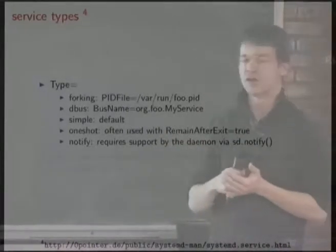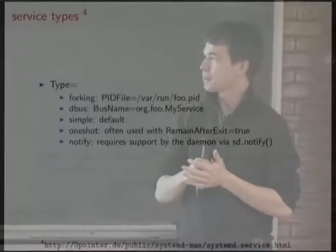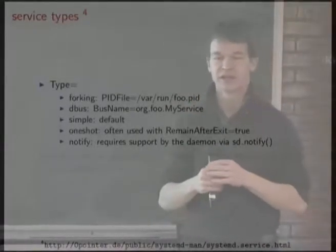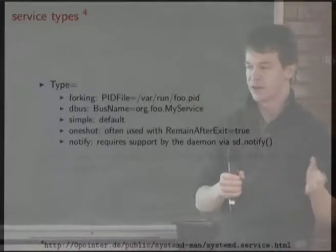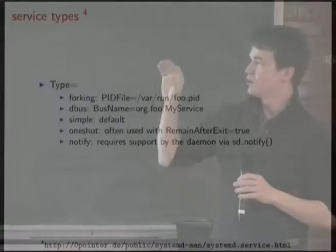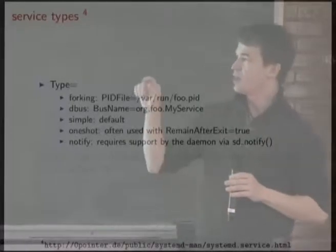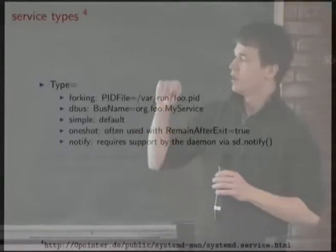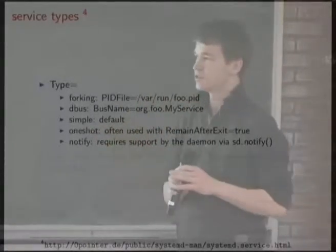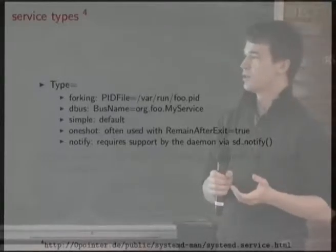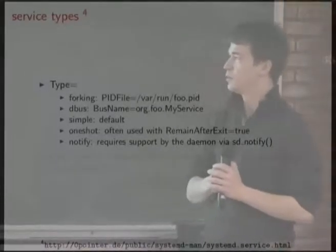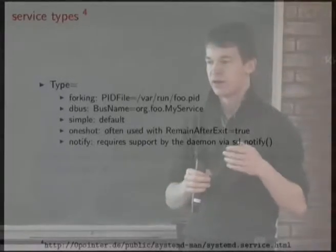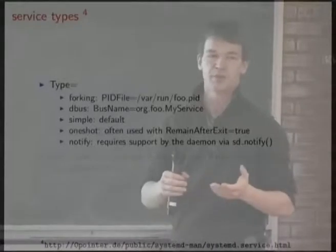Simple is the default type, for non-forking daemons. D-Bus type specifies that the daemon signals systemd when it's ready to accept requests, meaning dependent services are then started. You specify the bus name and when that's taken, the service is considered up. Forking means it's a classic sysvinit-style daemon — if you specify a PID file, systemd looks at that, and when the PID file has been written, that was the signal the daemon was up and ready.